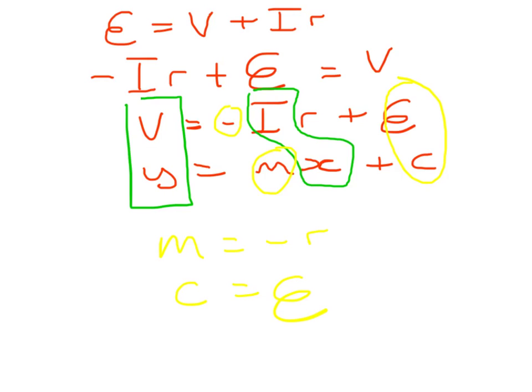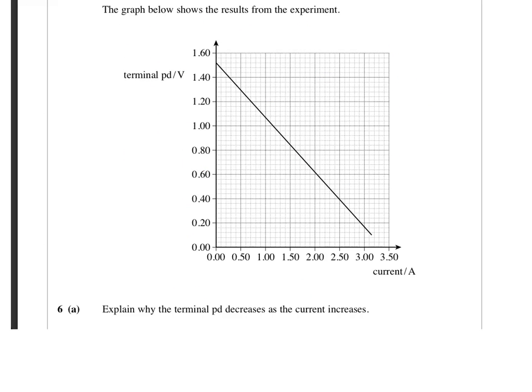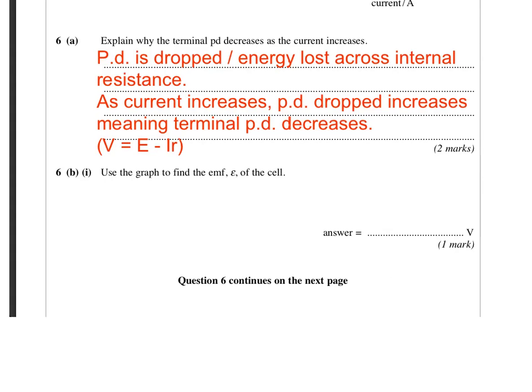So let's have a look back at the question. So this was the question it asked us, gave us the graph, and it said, why does the terminal PD decrease as the current increases? So from our previous discussion, we should be able to answer that now. There are two marks for this question.